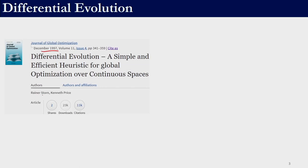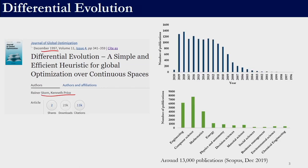Differential evolution was proposed in 1997 by Storn and Price. Ever since then it has been widely used by researchers. As time has progressed, differential evolution has been used by a large number of the research community. Since meta-heuristic techniques are independent of the domain of the problem, it has been used in engineering, computer science, decision sciences, social sciences, business management, and various other areas.